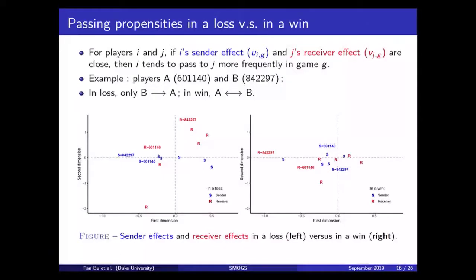So, here are the plots. So, basically, what's happening here is that a point on a two-dimensional plot represents a learned sender, a learned effect. A blue point is a sender effect. A red point is a receiver effect. The left panel is from a lost game. The right panel is from a won game.